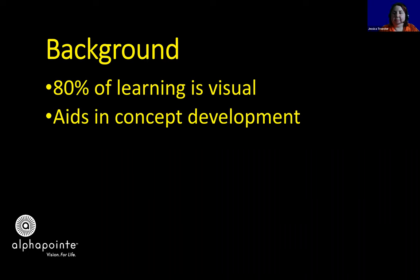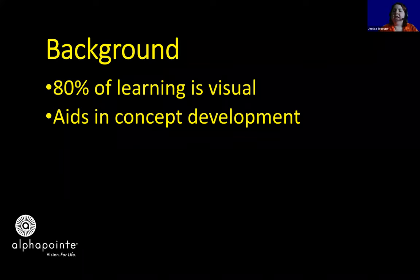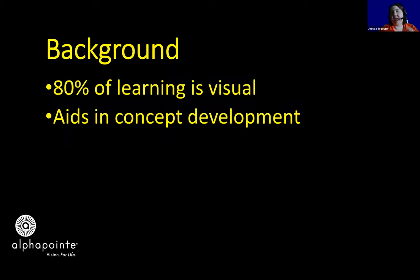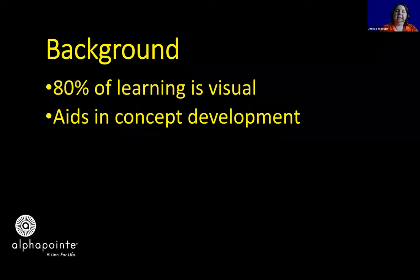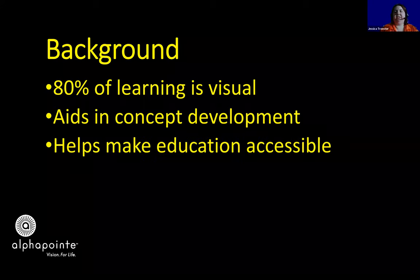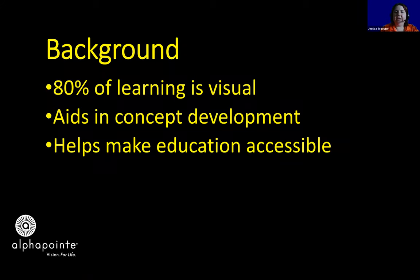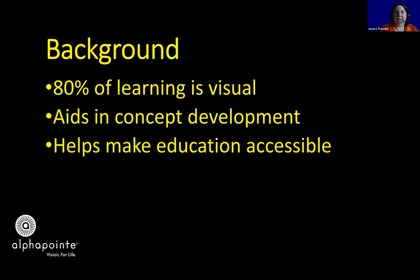This aids in concept development, which we'll talk about later. In a nutshell, concept development is your overarching understanding of something. For example, restaurants as a concept — we know there are drive-through restaurants, sit-down restaurants, fast food, and fine dining. Concepts can be difficult for children born with visual impairments. This also helps make education accessible, which is a big part of the compensatory skills we'll discuss — how students can use these skills to access the general education curriculum in the classroom.